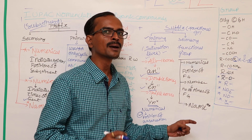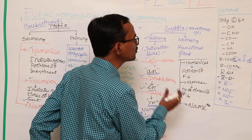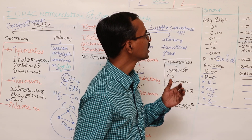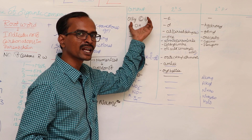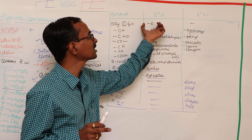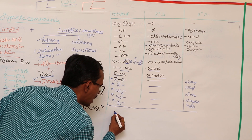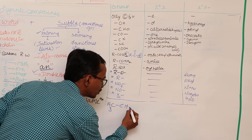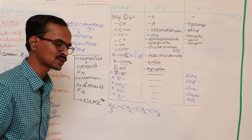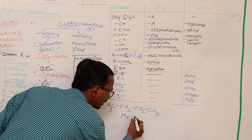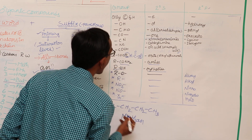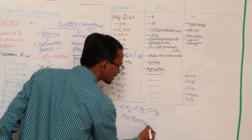If a carbon compound has only carbon and hydrogen atoms with no other atoms present, it is called a hydrocarbon, and the secondary suffix is -e. For example, consider the compound CH3-CH2-CH2-CH3. It has four carbon atoms, so the root word is but. It has all sigma bonds, so the primary suffix is -ane. It has only carbon and hydrogen, so the secondary suffix is -e. Therefore, the IUPAC name is butane.